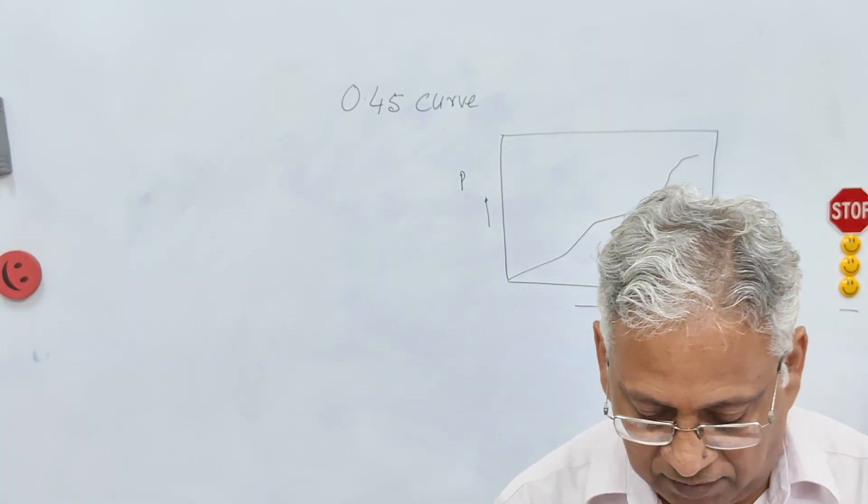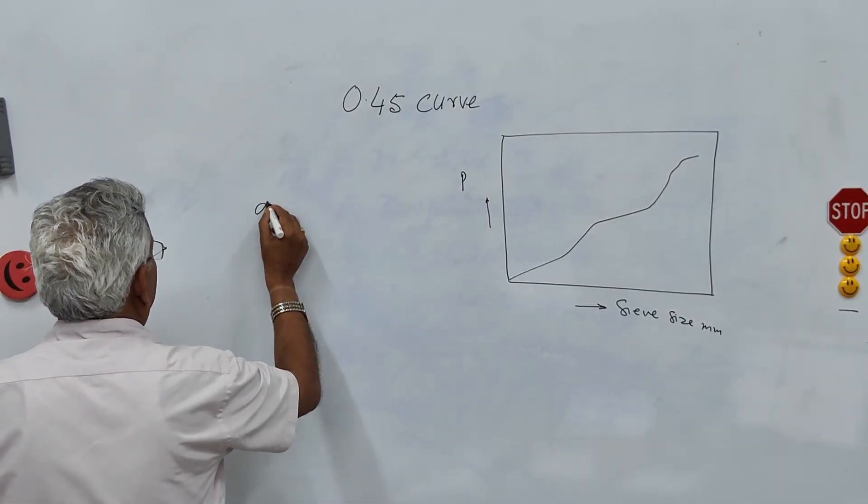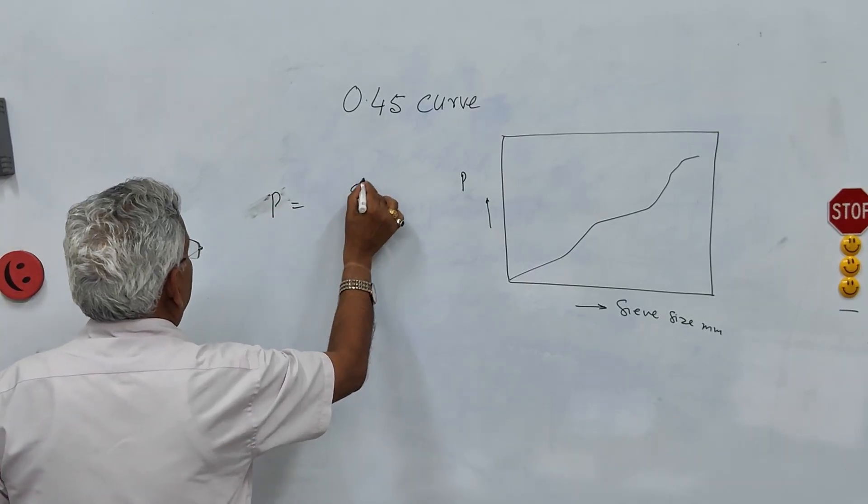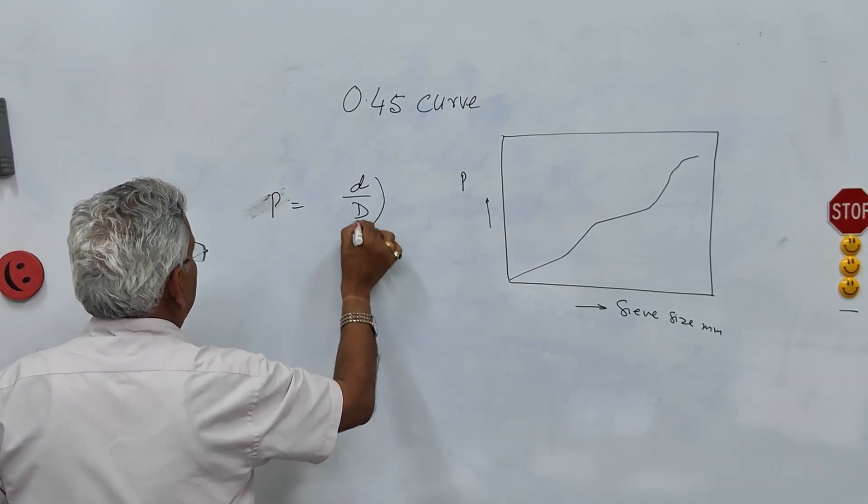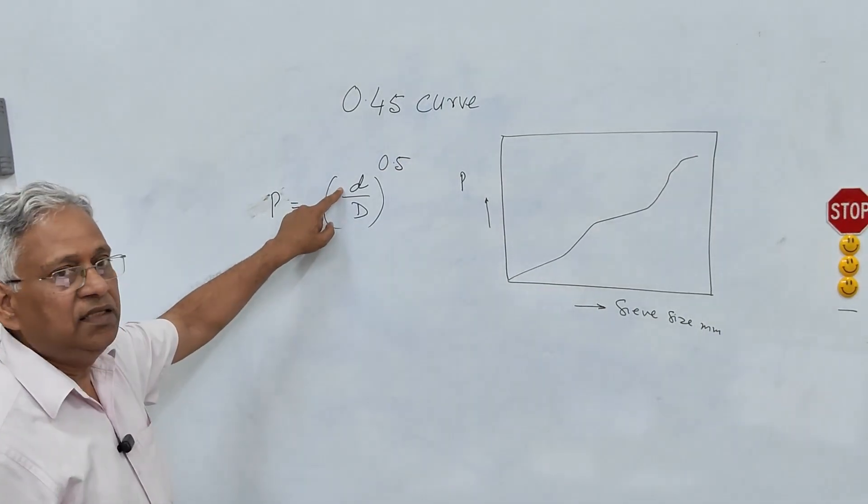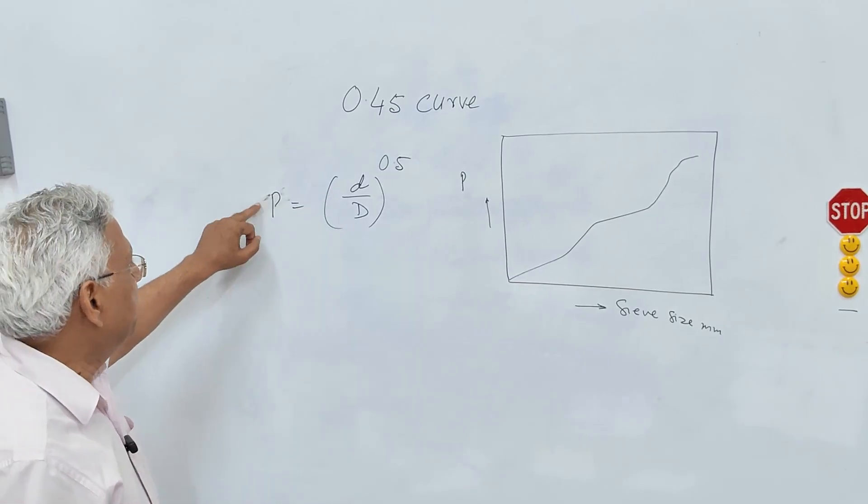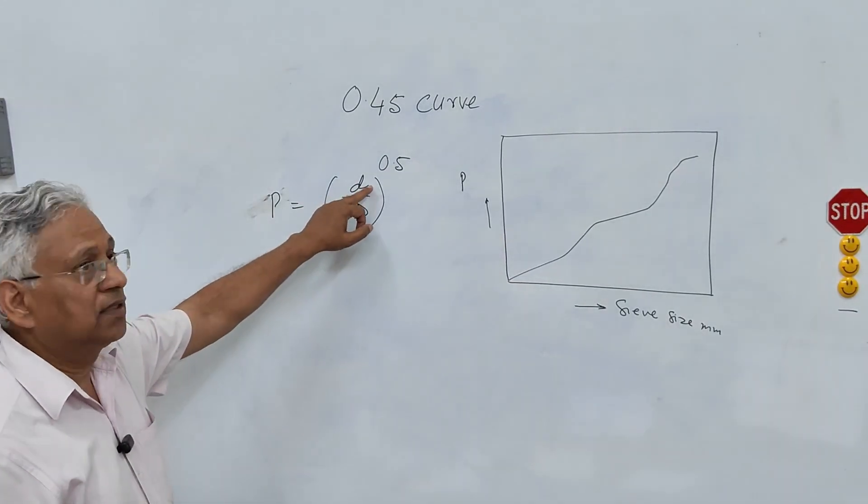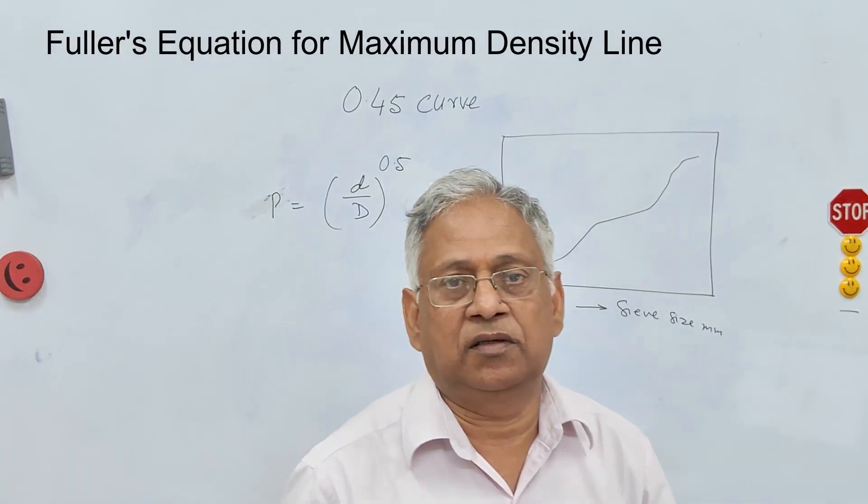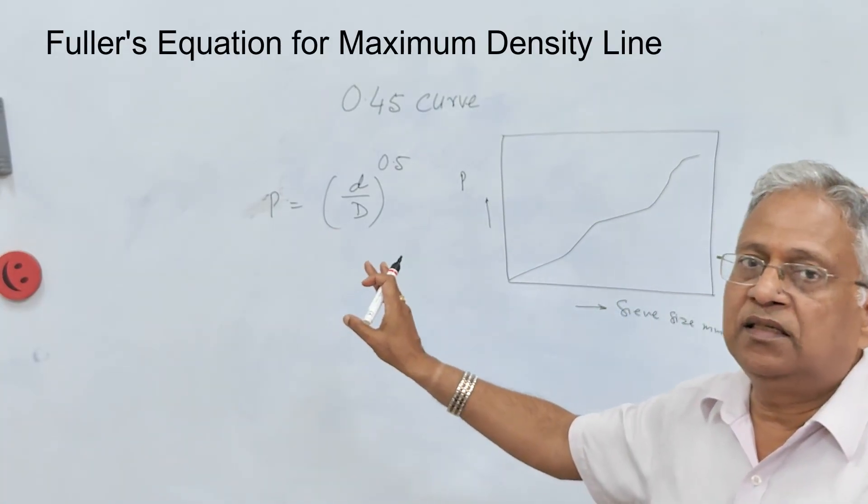Fuller and Thompson gave a grading which is called 0.5 power grading. What it says is that P equals D upon D max power 0.5, where d is the particle size and P is the percent passing through this size and D max is the maximum size of aggregate in the mixture. Now this is the maximum density curve.